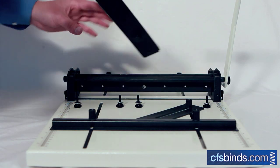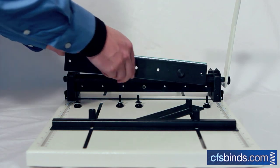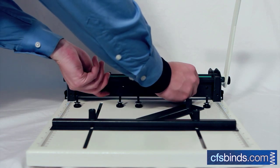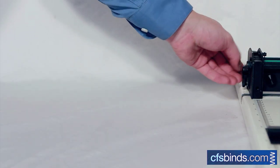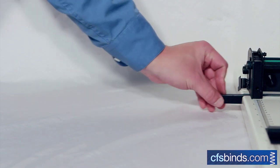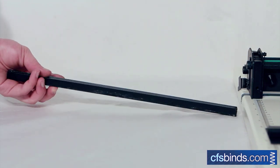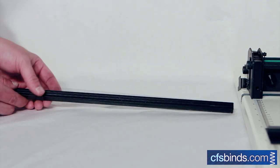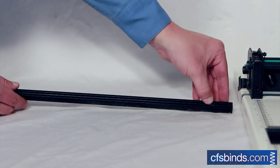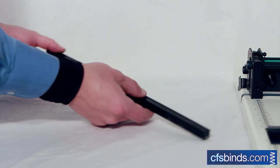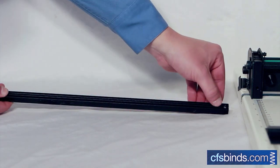To crease with the Graphic Wizard, ensure that the creasing blade is face down. We must also ensure that the bar is turned so that the creasing channels are facing up. There are two different channels: a wide channel and a narrow one.